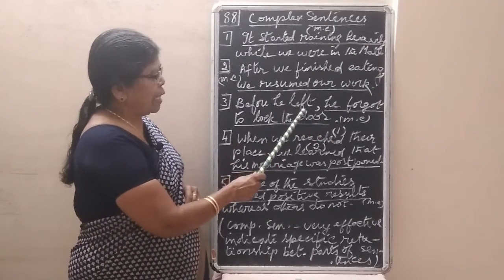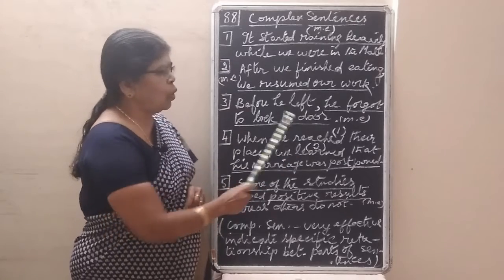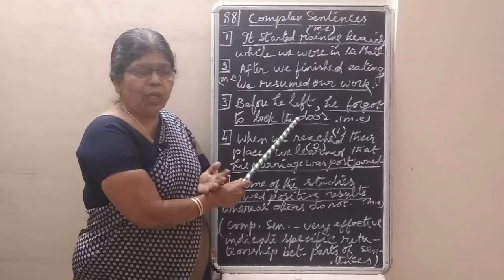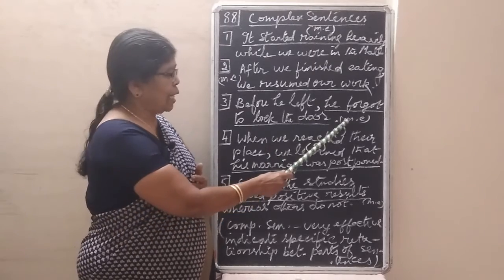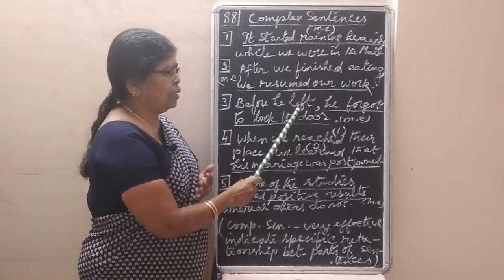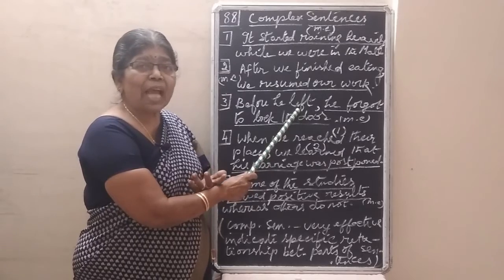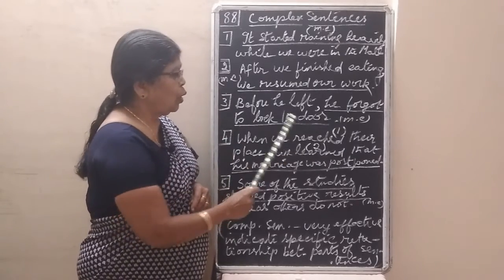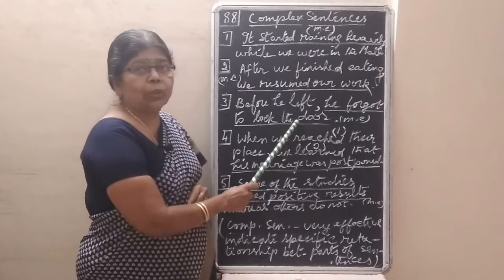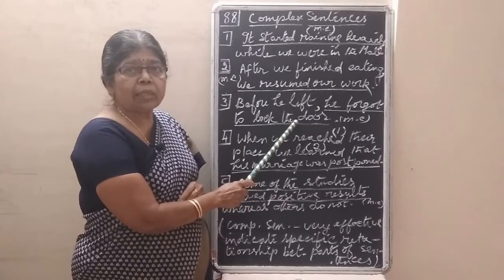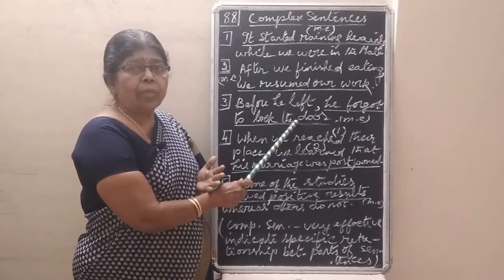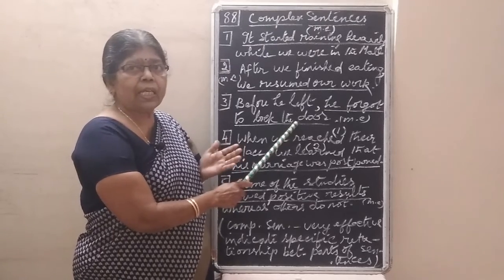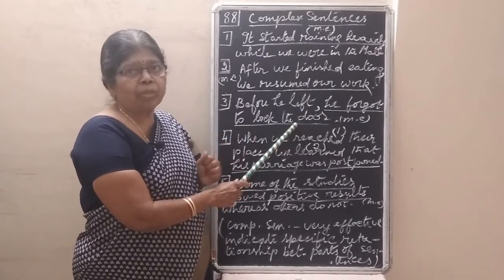Before he left, he forgot to lock the door. What's the main idea? 'He forgot to lock the door' — that's the main clause. 'Before he left' tells us when it happened. In simple sentences we have one clause, but here we add subordinate clauses to give additional information.